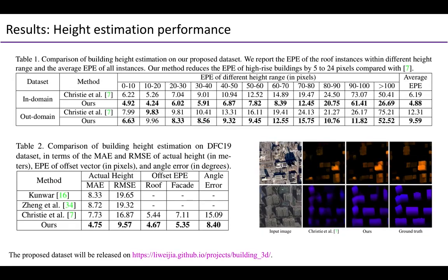The performance of our method is evaluated on a public building reconstruction dataset named DFC19 and a novel dataset proposed in this work. For height estimation evaluation, we compare our method with current state-of-the-art and two winning solutions on the DFC19 dataset. Our method outperforms state-of-the-art in terms of all metrics, reducing the RMSE and angle error by over 40%.